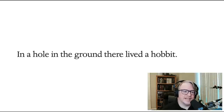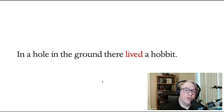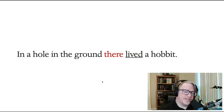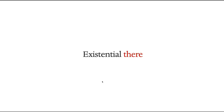This sentence has a single verb in it: the verb 'lived'. If you ask the question, who is doing the living? Well, it's clearly a hobbit. And yet, a hobbit is not in the subject position in the sentence. The subject position is filled by the word 'there'. This is an example of what's called an existential there — sometimes an expletive or dummy there. The main reason that existential there's are used is to emphasise a particular situation at a point in time or in a particular location.